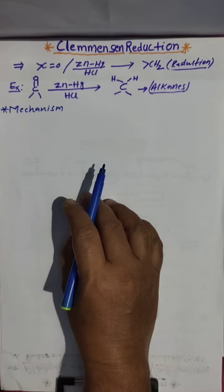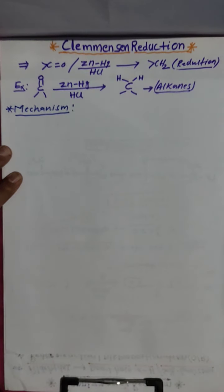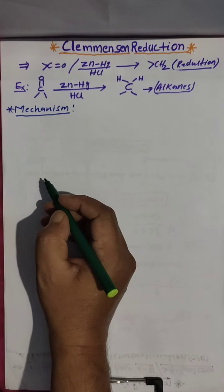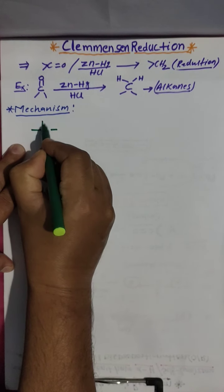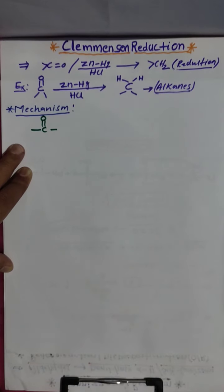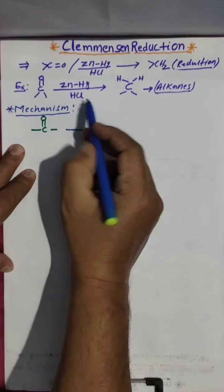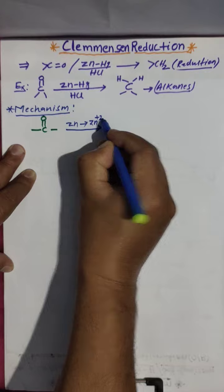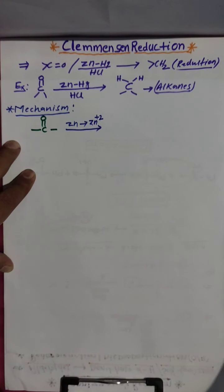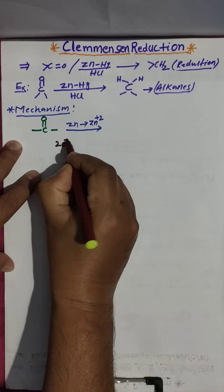Now I am explaining the mechanism. Look here how the mechanism takes place. First, we have the C=O group. We are using zinc amalgam, in which zinc will participate in the reaction, losing electrons to form Zn²⁺. This gives us two electrons available.